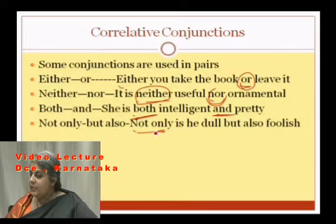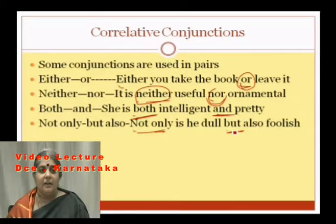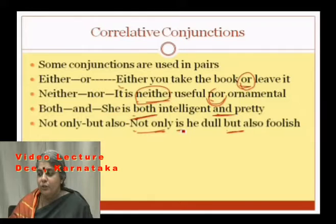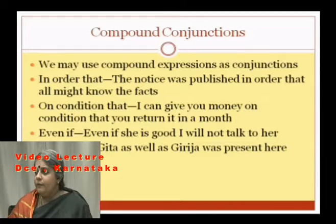With 'not only but also' there is inversion: 'Not only is he dull but also foolish.' Notice the inversion — the subject does not come in its normal position; the verb comes before the subject. These are conjunctions that are used in pairs.